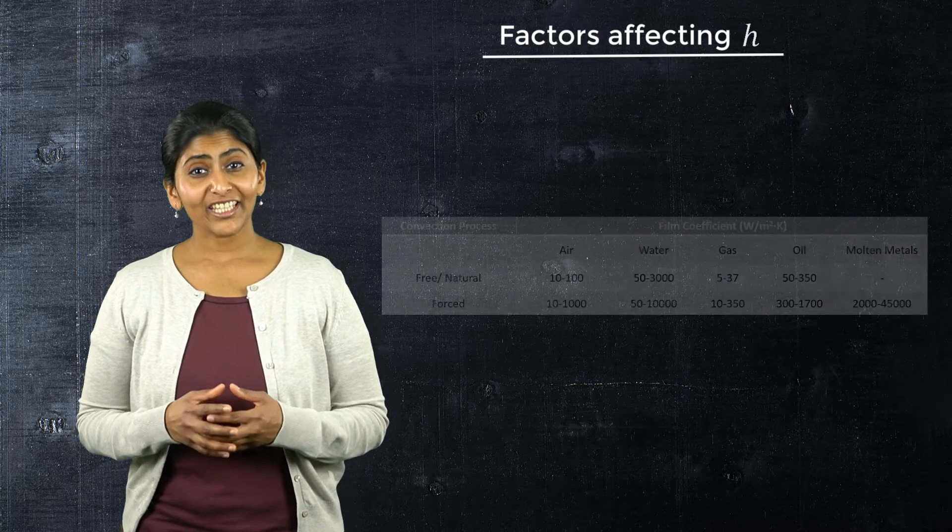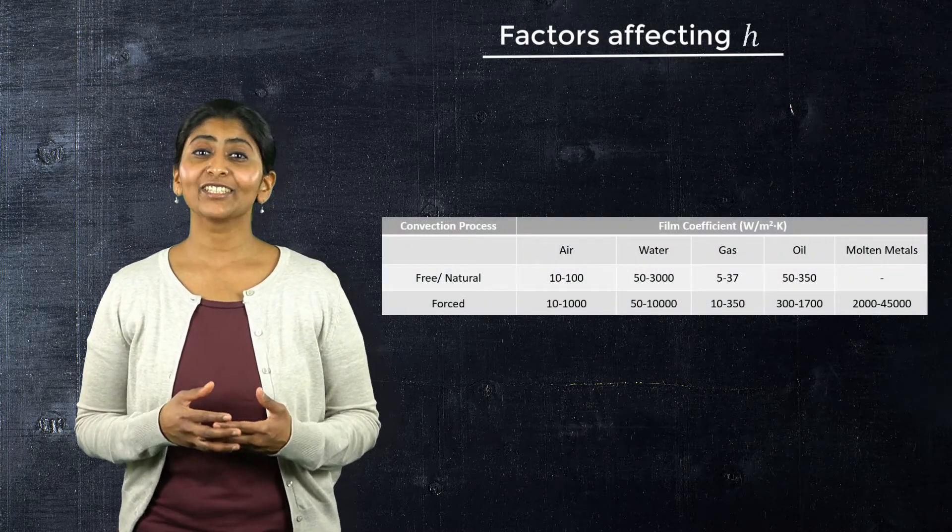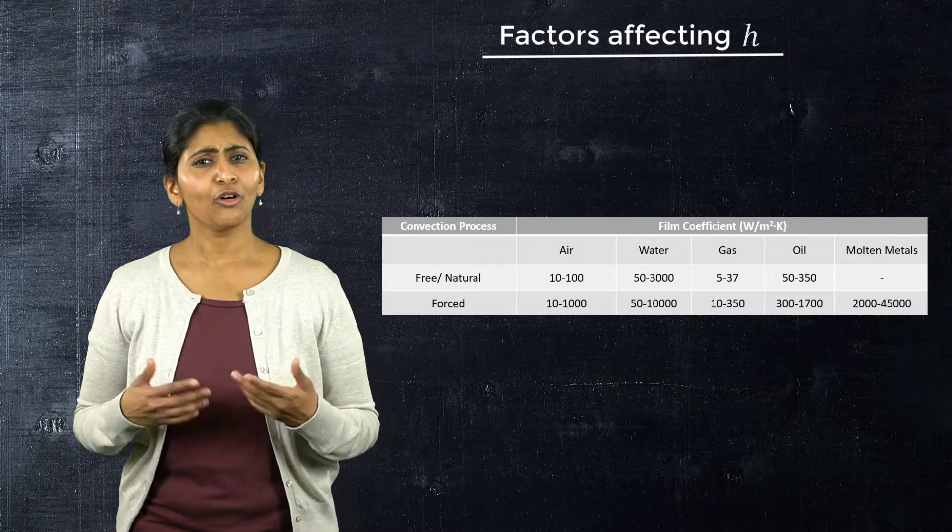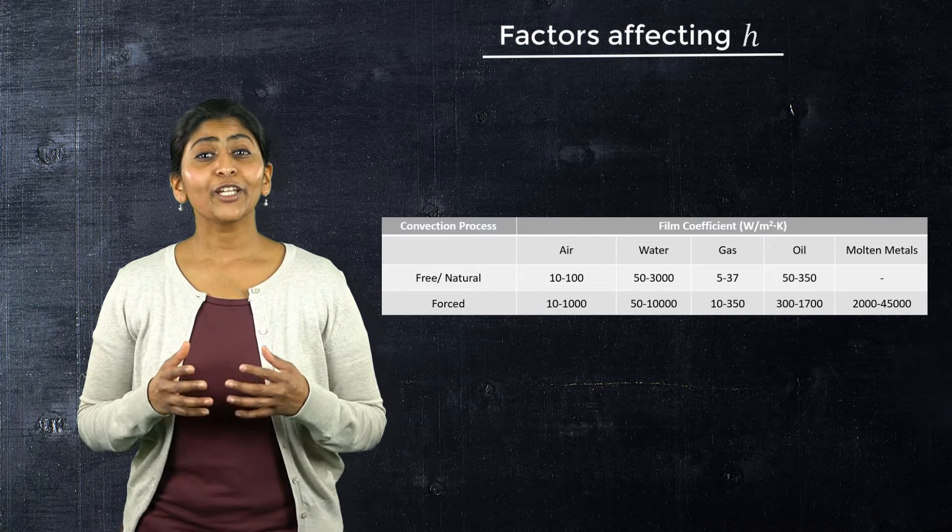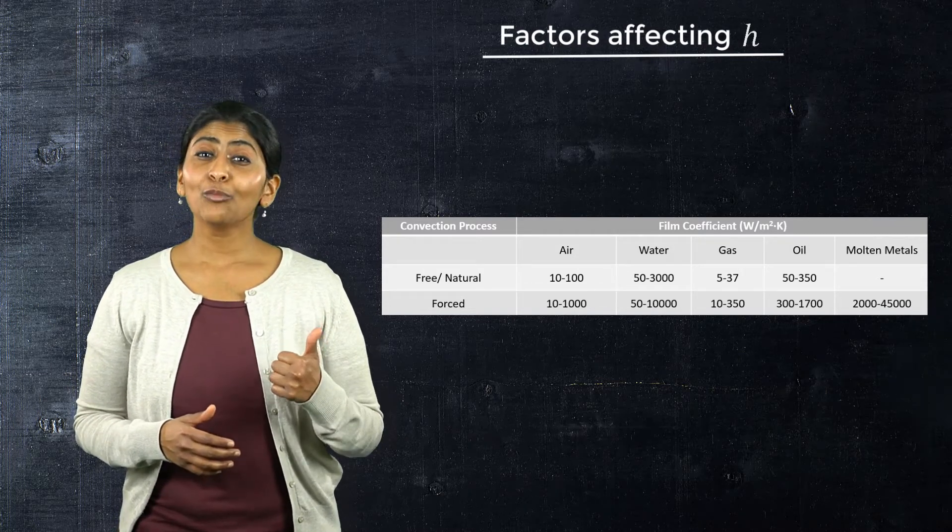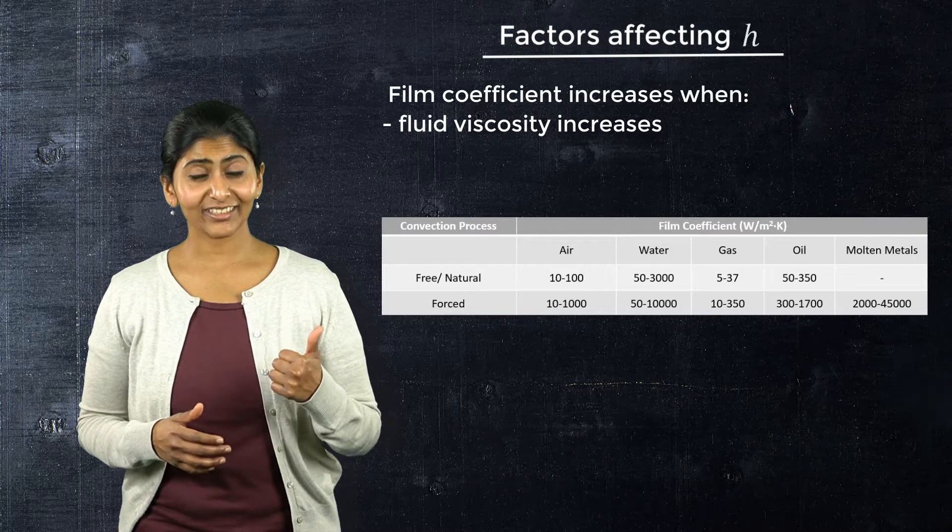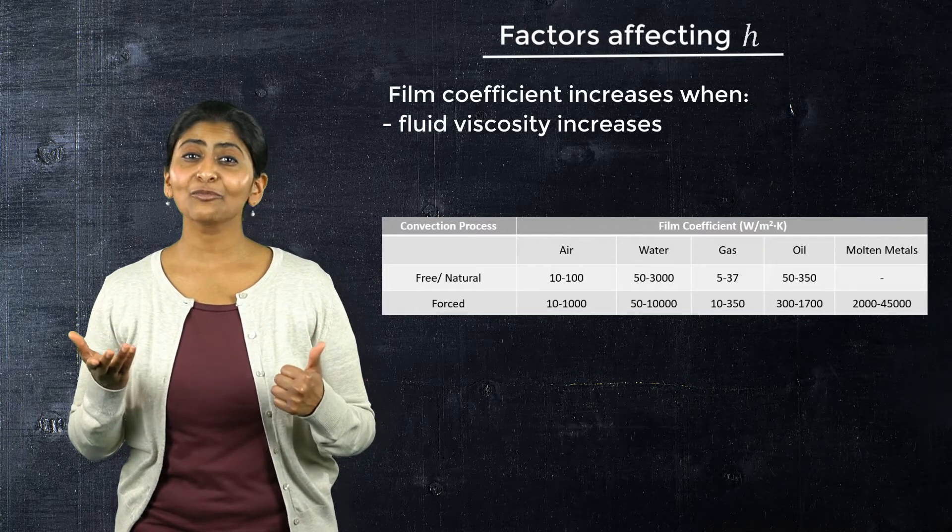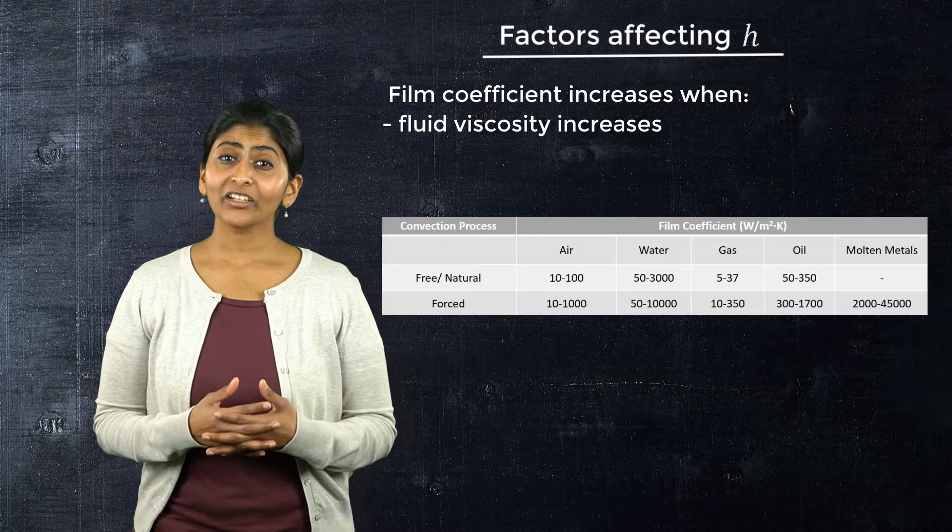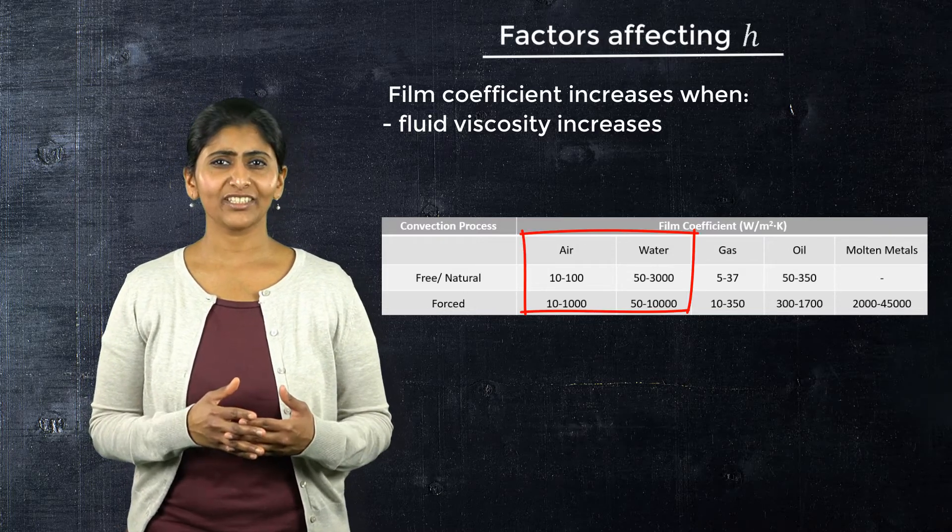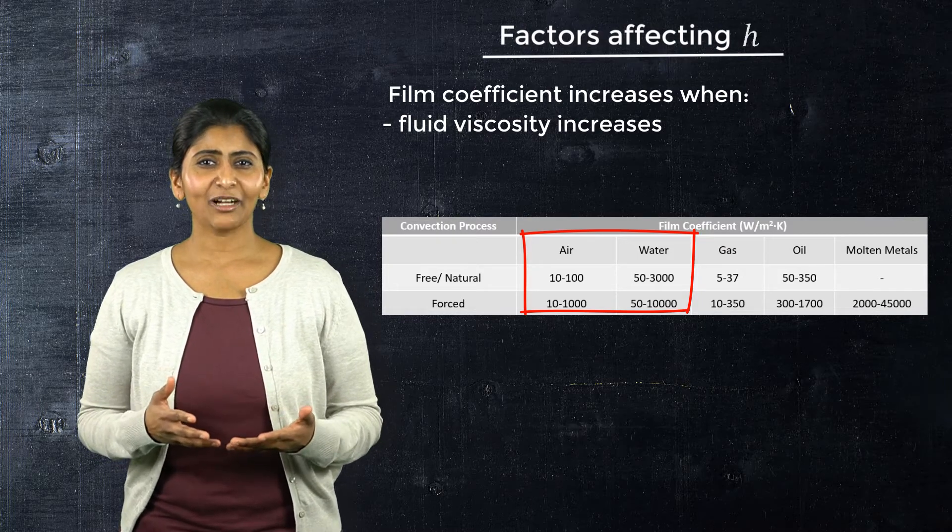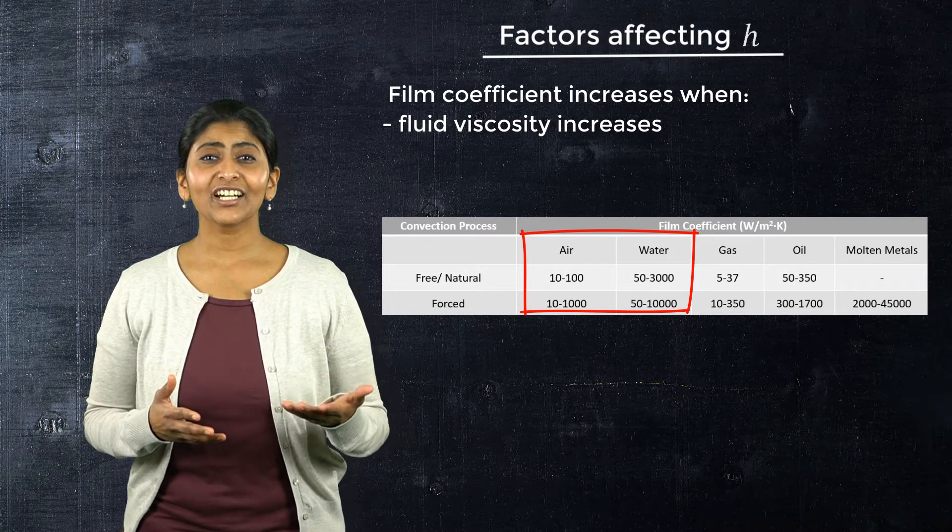If we investigate the table here, which compares the film coefficients for free and forced convection for various fluids, we observe a few things. First, the more viscous a fluid is, the higher is its film coefficient value. For example, water has a higher film coefficient as compared to air.